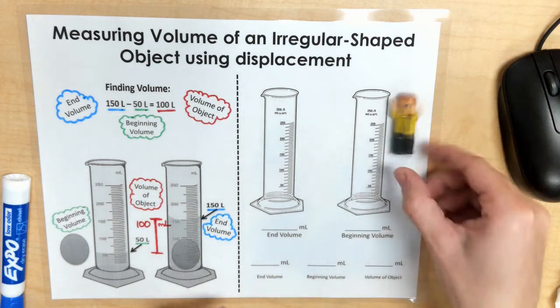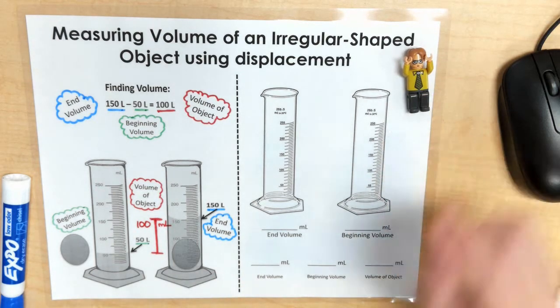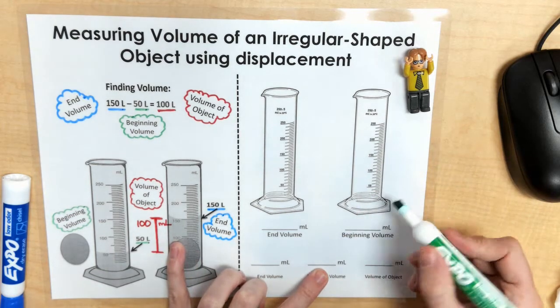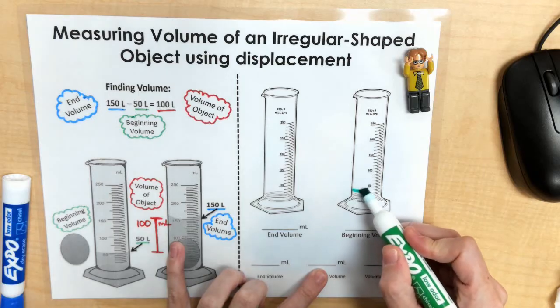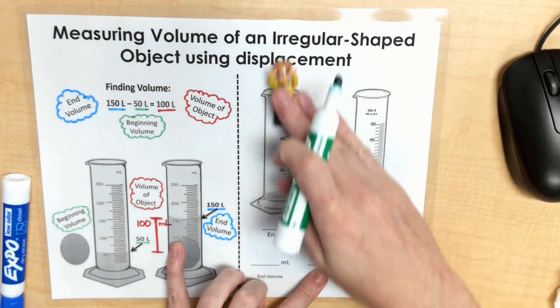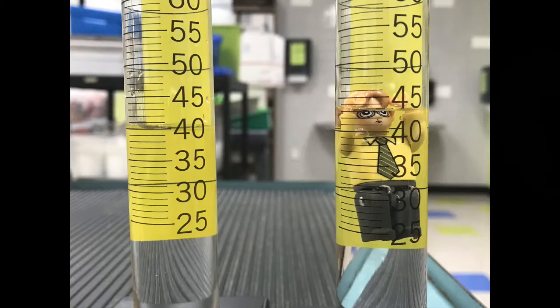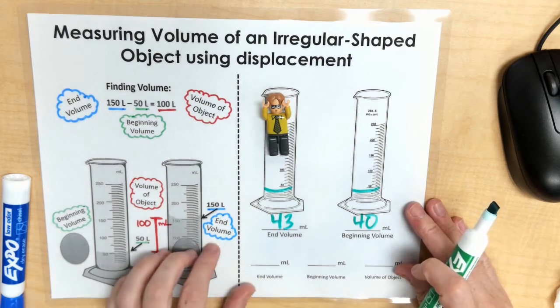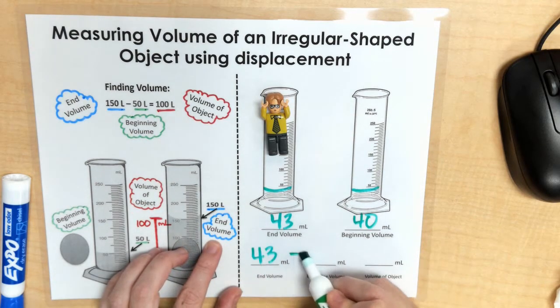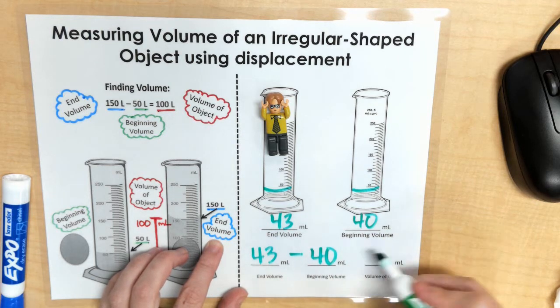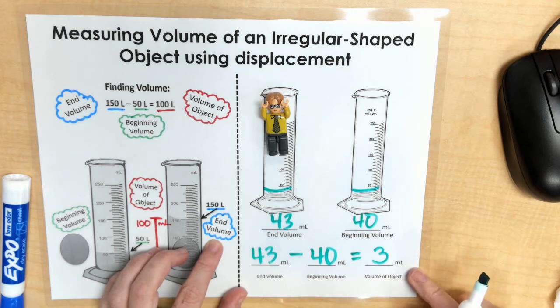However, with the volume of my Lego piece, I started my beginning volume of my liquid at 40 milliliters. I used a smaller graduated cylinder and then I plopped him in and the water level rose up to only about 43 milliliters. So there's not that big of a difference. 43 milliliters, we subtract the beginning volume to get our volume of our object, which is only 3 milliliters.